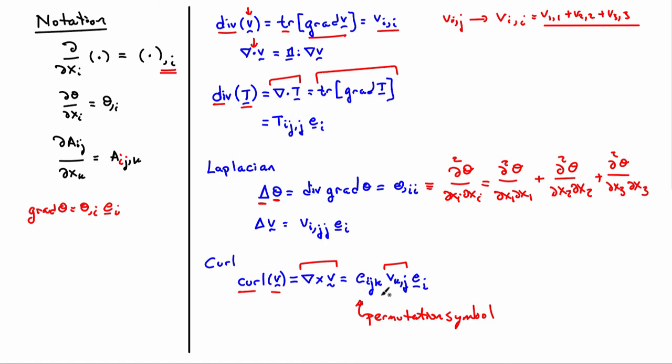The thing that comes up most often is the divergence of a tensor field. We'll see that later because it's intimately related to the equilibrium conditions for a solid body or any body. The divergence of the stress field in particular is in general equal to zero. Those will result in the equations that we solve to determine the equilibrium of a body under load.